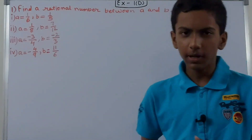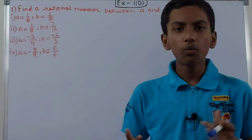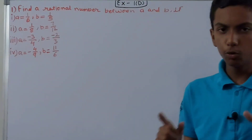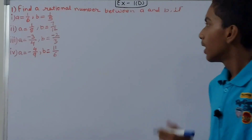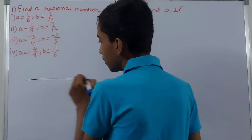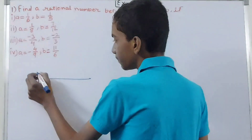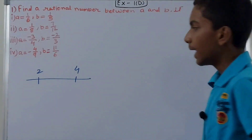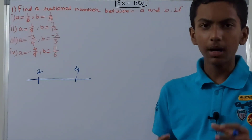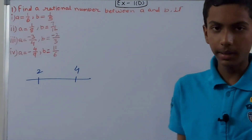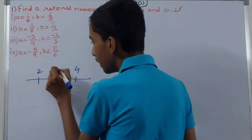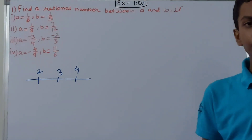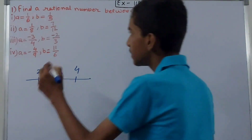What this is asking is to find a rational number between two rational numbers. On a number line, say we have 2 here and 4 here, and we have to find the rational number between them. Taking the simplest example, the answer is 3. That's the kind of number we need to find — but there is a formula when we have fractions.